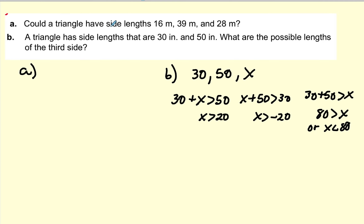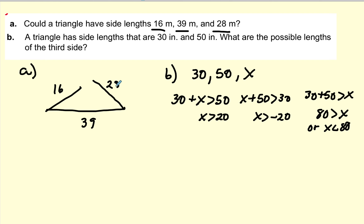Could a triangle have side lengths 16, 39, and 28? Let's add 16 and 28 and compare to 39. 16 plus 28 equals 44, and 44 is greater than 39, so yes — these two sides will actually meet to make a triangle because they add up to more than 39.